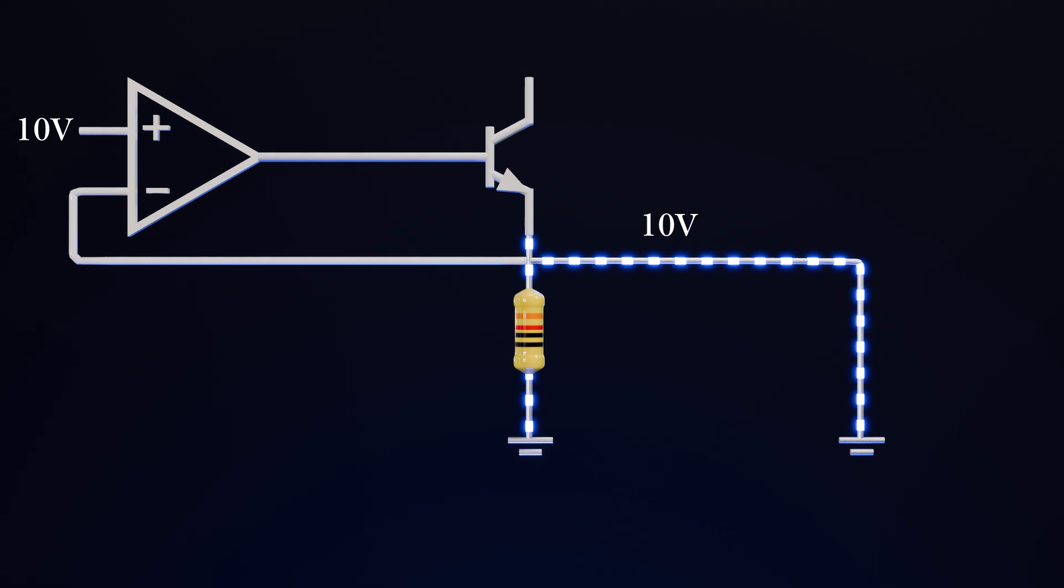Now suppose you short the output. This time, almost all the current will flow through this short, and 0 volt will appear here. The op amp will notice this and will try to increase the current, but no matter how much the current increases, the voltage will remain at 0 volt. This situation will definitely destroy the transistor. So we must find out a way to limit the current in such situations.